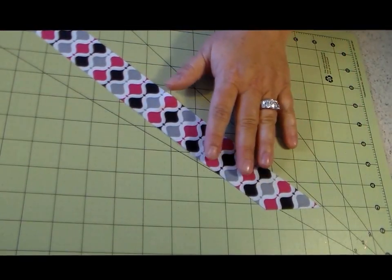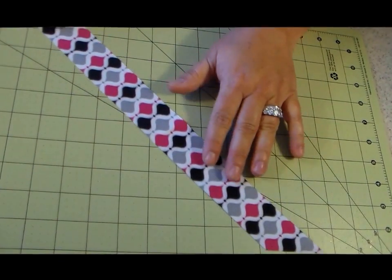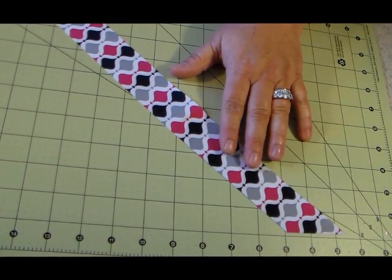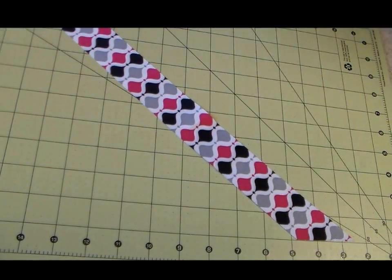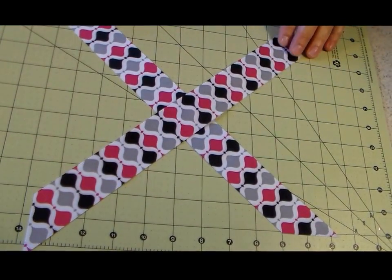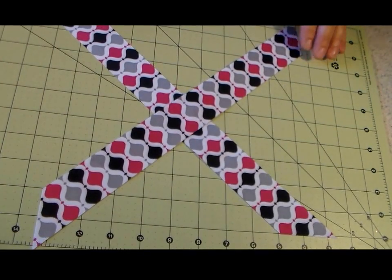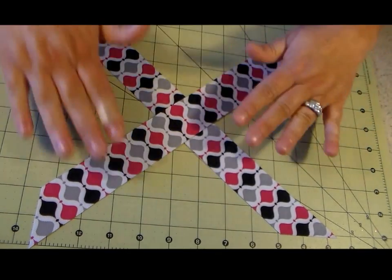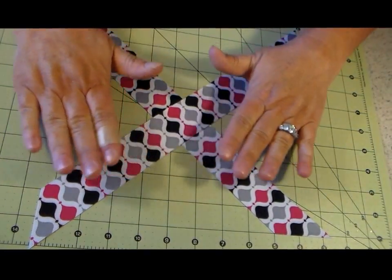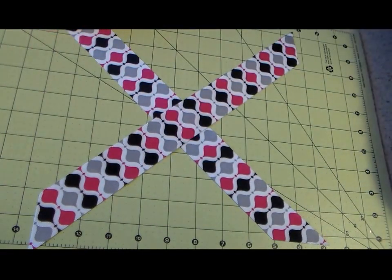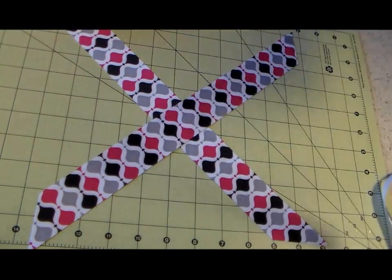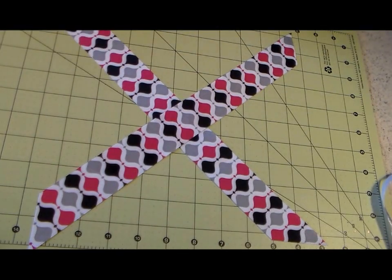Kind of like an X or an asterisk, whatever you want to. So you put them in an X. And I always do the biggest ribbon first. So in this case, this is the one and a half inch ribbon.